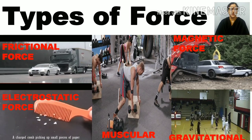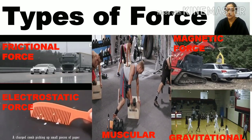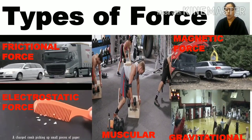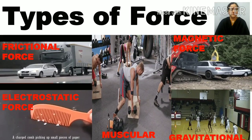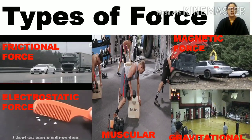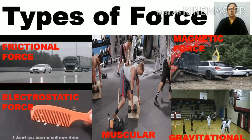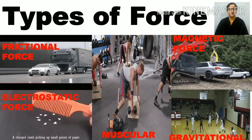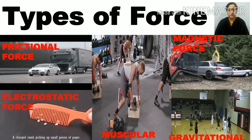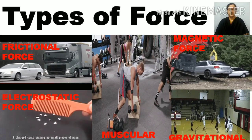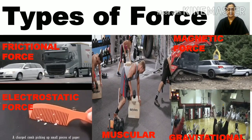Let us understand about types of force. Number one: frictional force. Friction is caused when two objects move against each other, and the force created helps to decrease the speed of an object. You can see the truck applying the frictional force and brakes to stop the vehicle and protect from an accident.